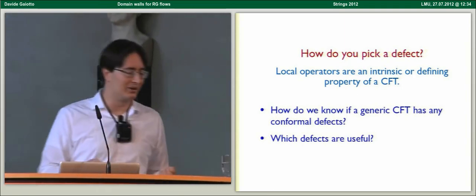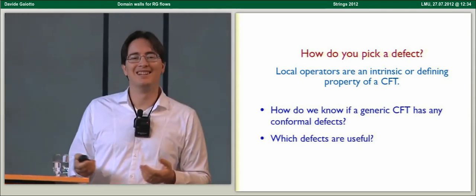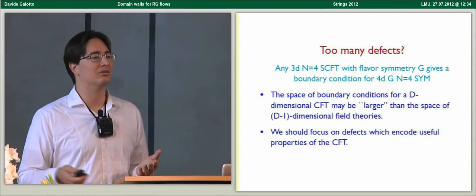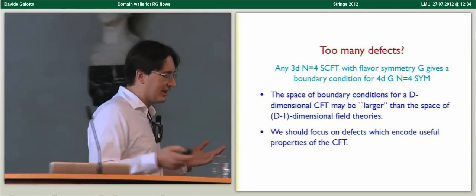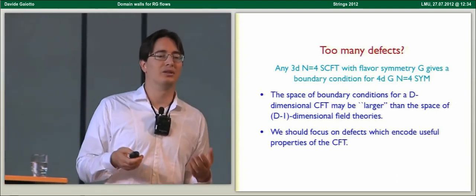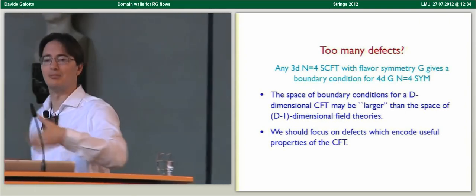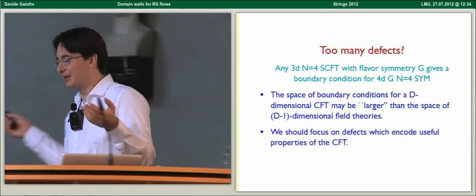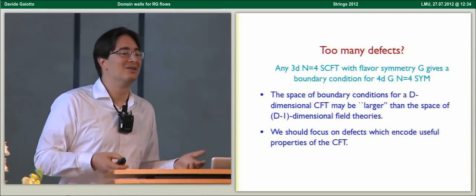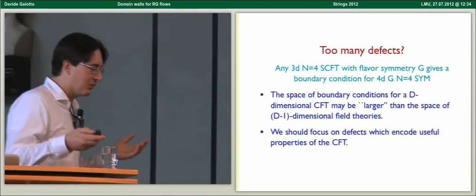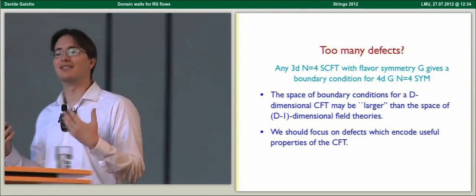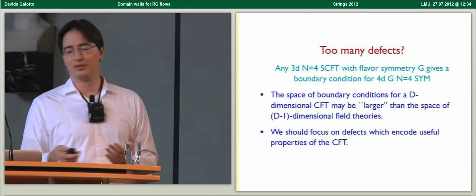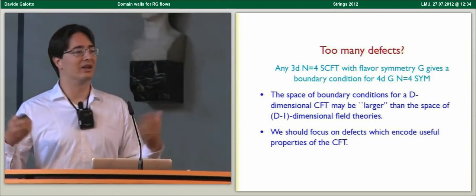If you look at the problem one way, you might think that there are probably almost no conformal defects in a general conformal field theory — that typically if you take a defect and flow to the infrared, you'll just lose it. On the other hand, there are examples where you have way too many defects. In N=4 super Yang-Mills, if you take a generic three-dimensional superconformal field theory with a flavor symmetry you can couple to the bulk gauge fields, you get superconformal boundary conditions — so sometimes you find as many boundary conditions as you have field theories, and you wonder which, if any, are really teaching you something intrinsic about the bulk theory.